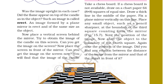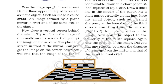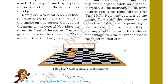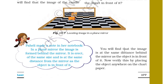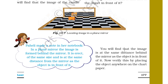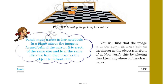As in figure 15.7, note the position of the image. Now shift the object to the boundary of the fourth square and again note the position of the image. Do you find any relation between the distance of the object from the mirror and the distance of the image? Paheli noted: in a plain mirror, the image is formed behind the mirror. It is erect, of the same size, and at the same distance behind the mirror as the object is in front of it. Verify this by placing the object at different positions on the chart paper.